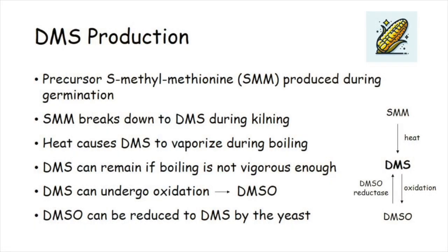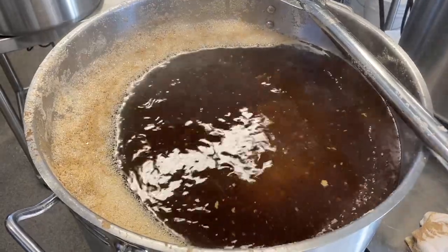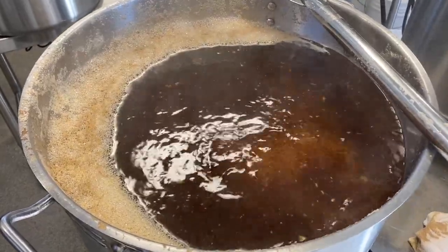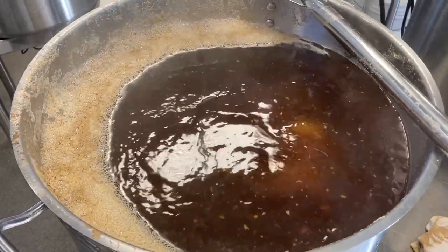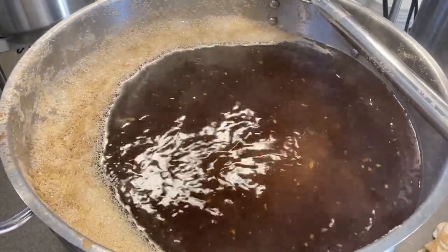When the wort is boiled in the brew kettle, the heat causes DMS to vaporize and much of it is driven off. However, some DMS can remain in the wort, particularly if boiling is not vigorous enough.